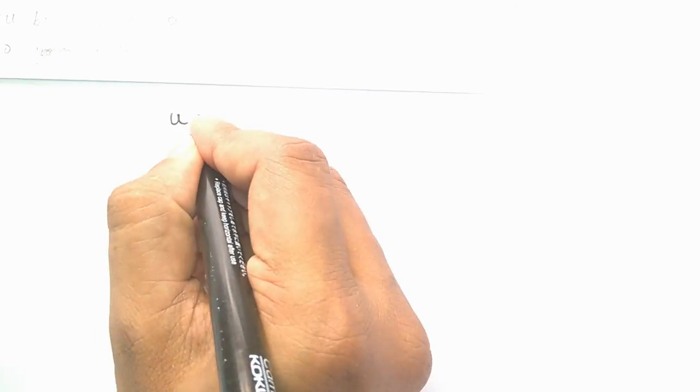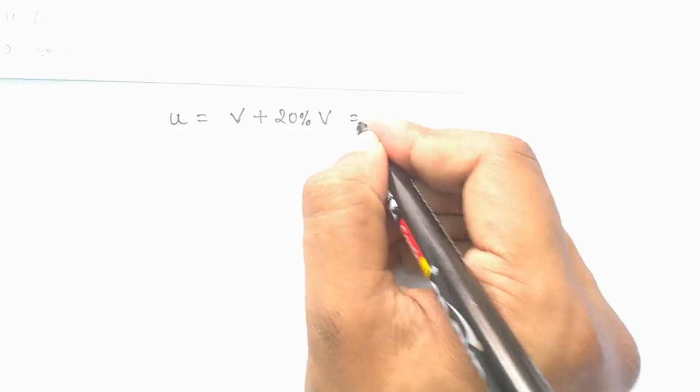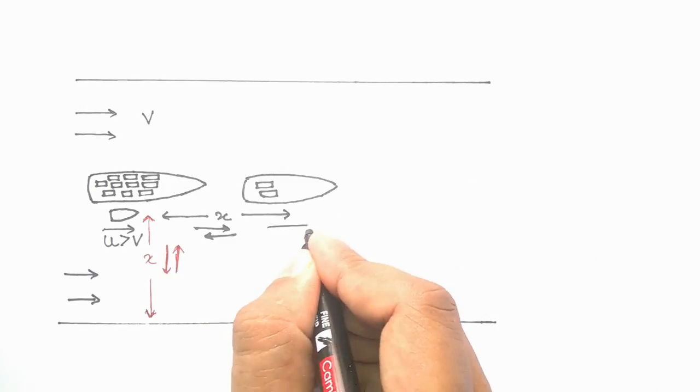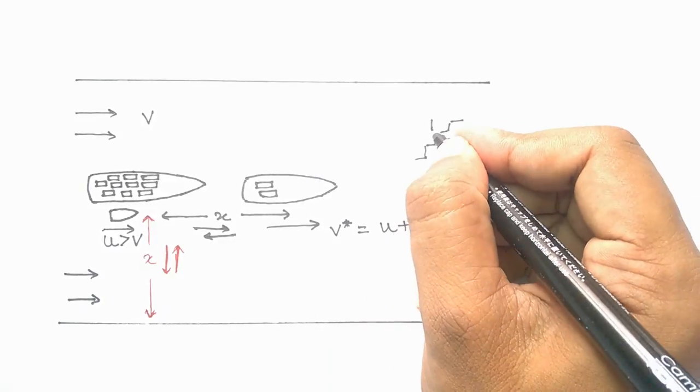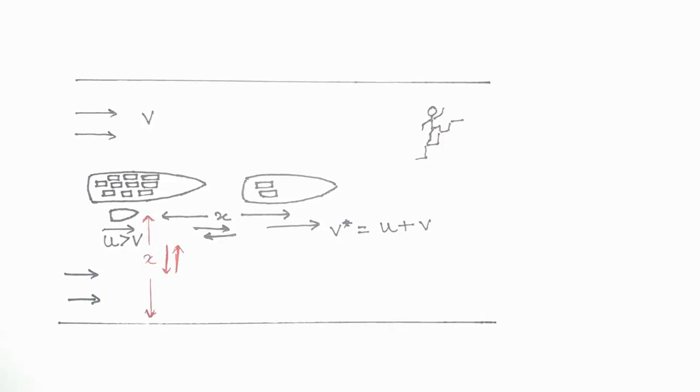Let us say that your velocity is 20% more than the velocity of stream. So while going downstream, your velocity will be the sum of your velocity in still water and the velocity of stream, as if you are running on an escalator.